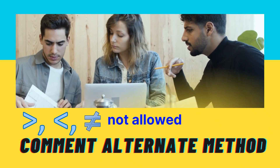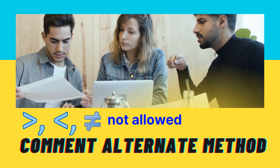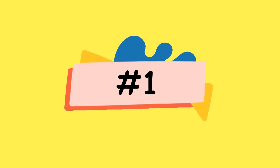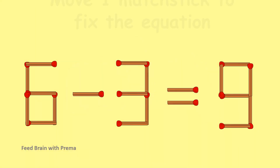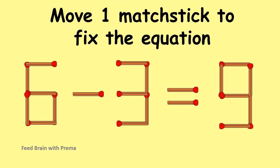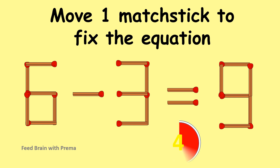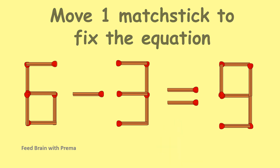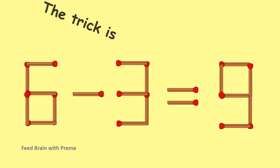Comment, alternate method. More one match texture, fix the equation. The trick is...